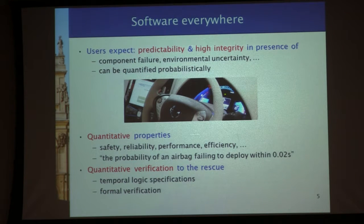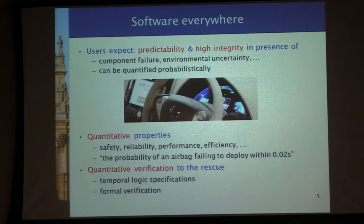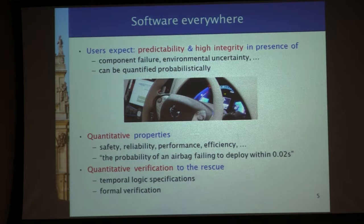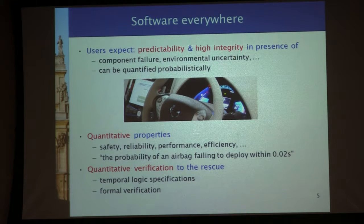Under some reasonable assumptions, we can talk about the probability of failure. We might also need to bring in some statistical observations to validate these probabilities, but this is possible. From that, we can talk about quantitative probabilities — we can express safety and reliability as: the probability of something bad happening is very small. For example, the probability of an airbag failing to deploy within some fraction of a second. And what people like me bring into this context is quantitative verification.